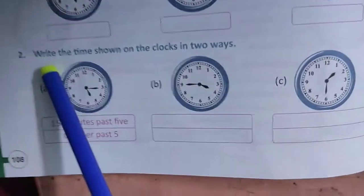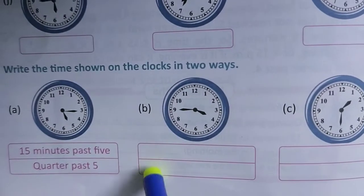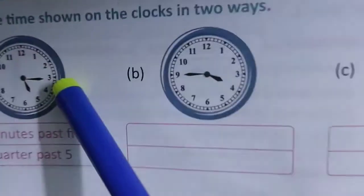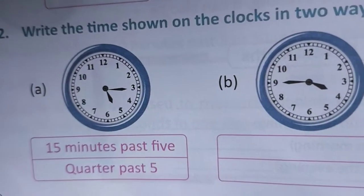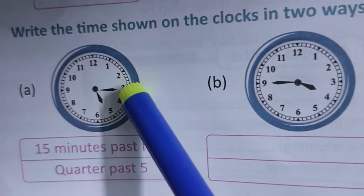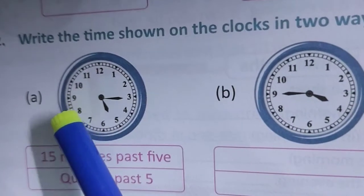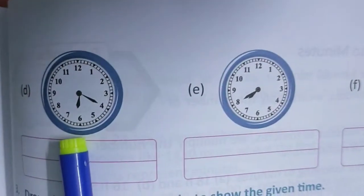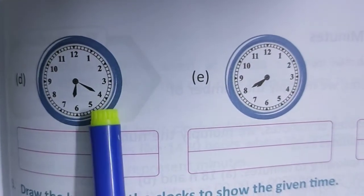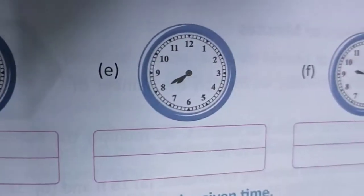Now come to number 2. Write the time shown on the clocks in two ways. That means, see 5, then 5:15 or 15 minutes past 5 or quarter past 5. Quarter past, if minute hand is in 9, then quarter to. Now, here also see 6, 6:20. And 20 minutes past 6, completed.